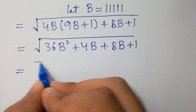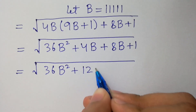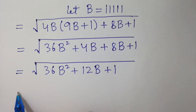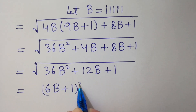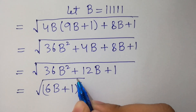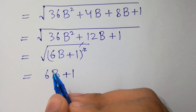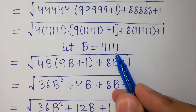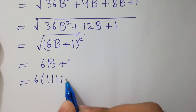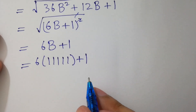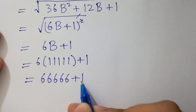We have 36b² + 12b + 1. We can factorize this as (6b + 1)² — and the square root cancels with the square root, giving us 6b + 1. Since b equals 5^(1, 2, 3, 4, 5) plus 1, we substitute: 5 times 6 — 1, 2, 3, 4, 5 — plus 1.